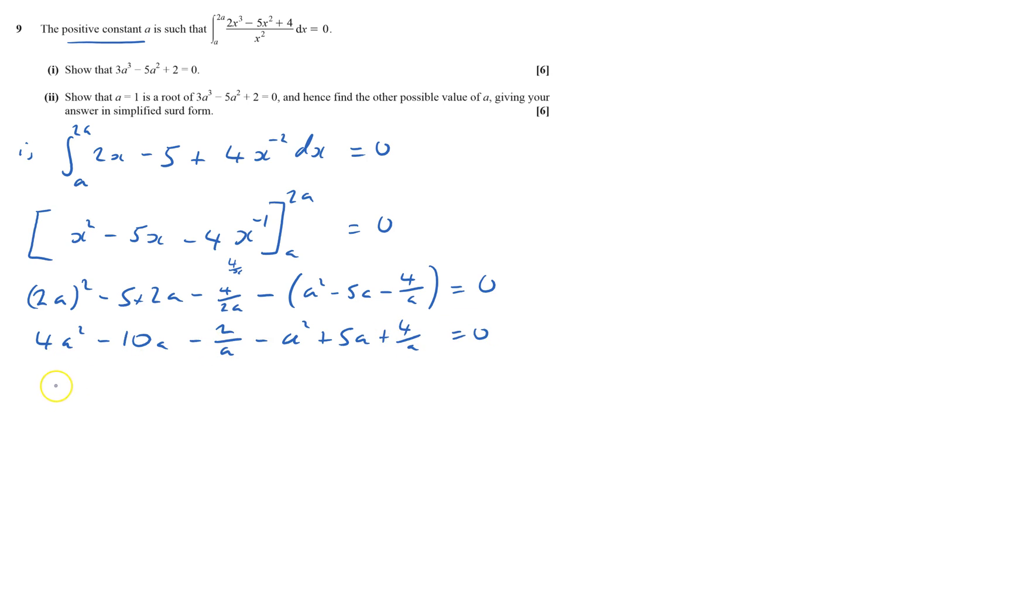I've got 3a squared, I've got minus 10a plus 5a is minus 5a, and minus 2 over a plus 4 over a, so it'll be minus 2 plus 4 will be plus 2 over a, that equals zero, times by a, 3a cubed minus 5a squared plus 2 equals zero.